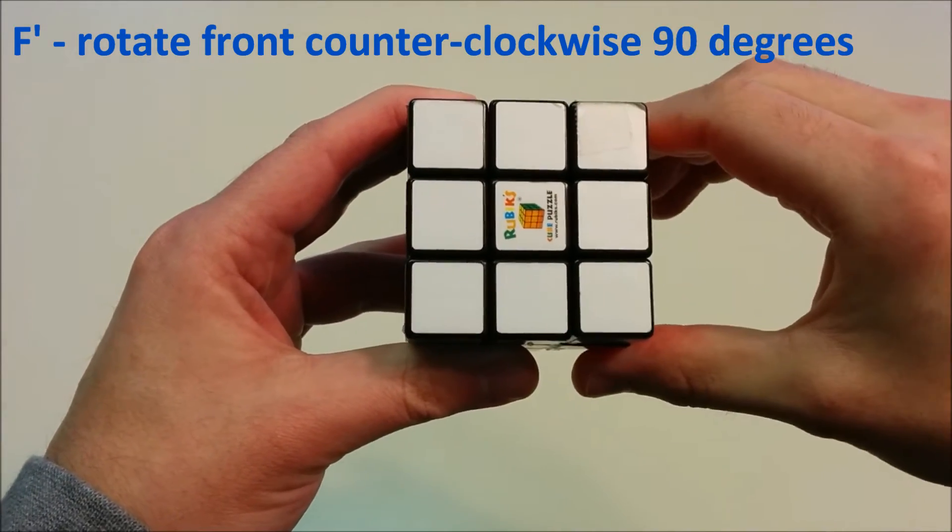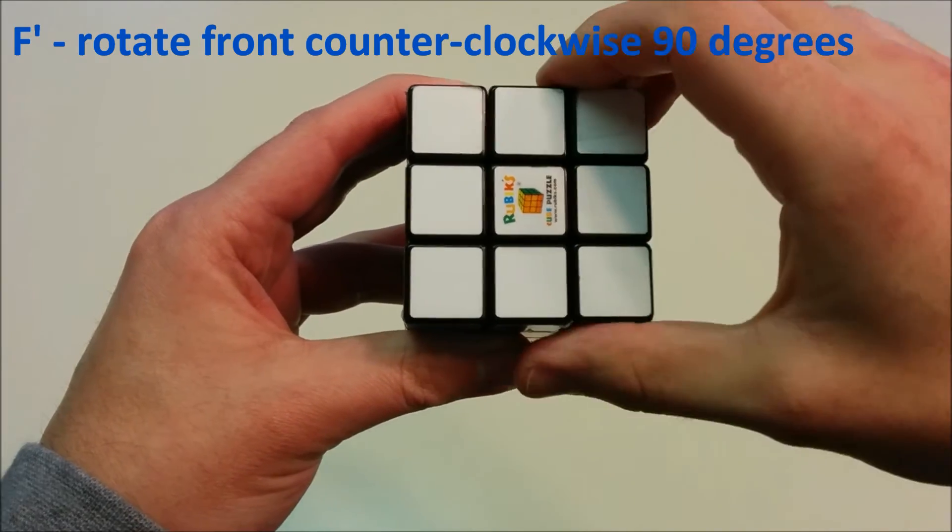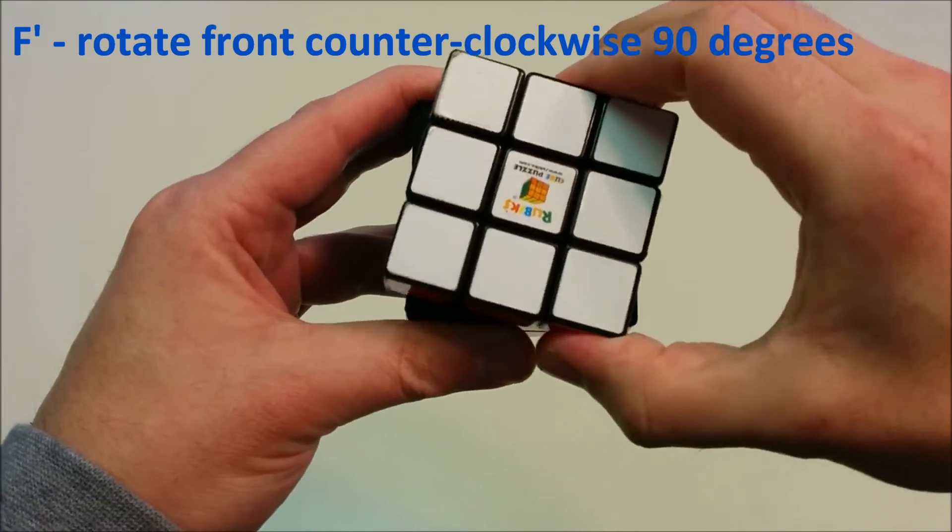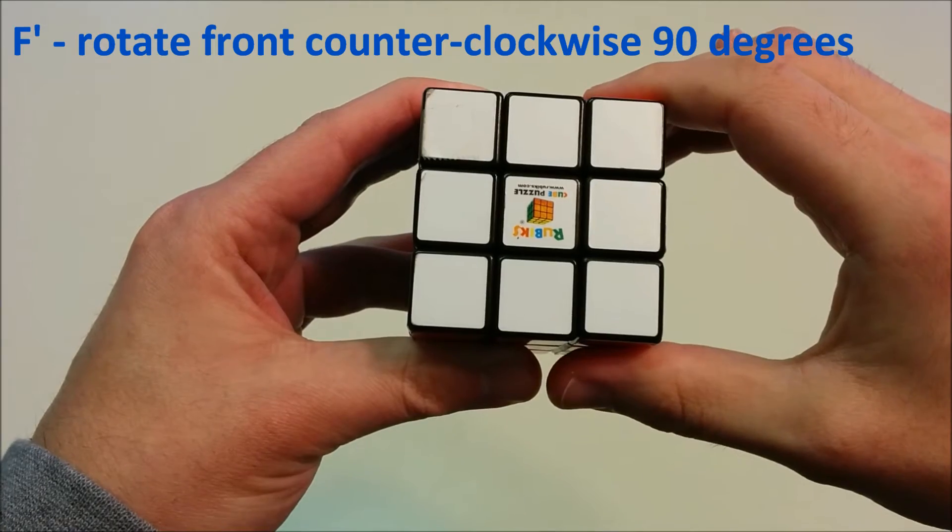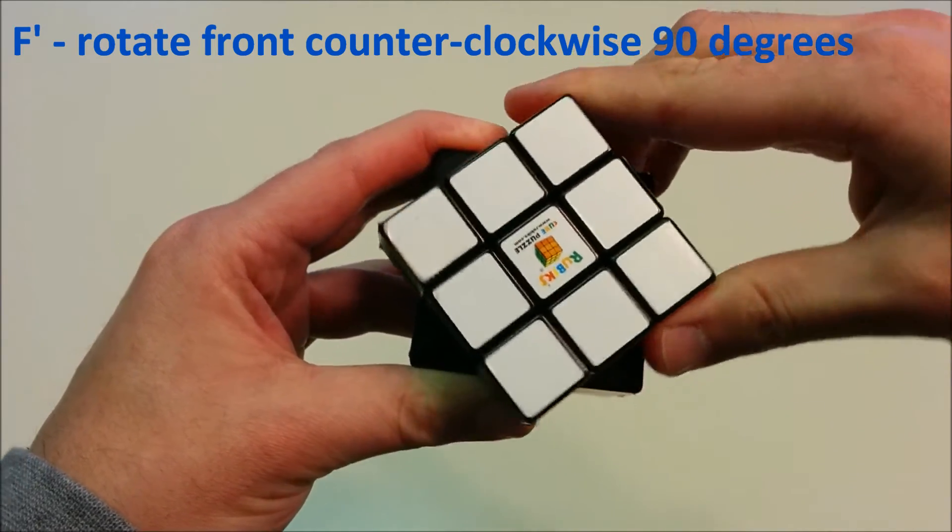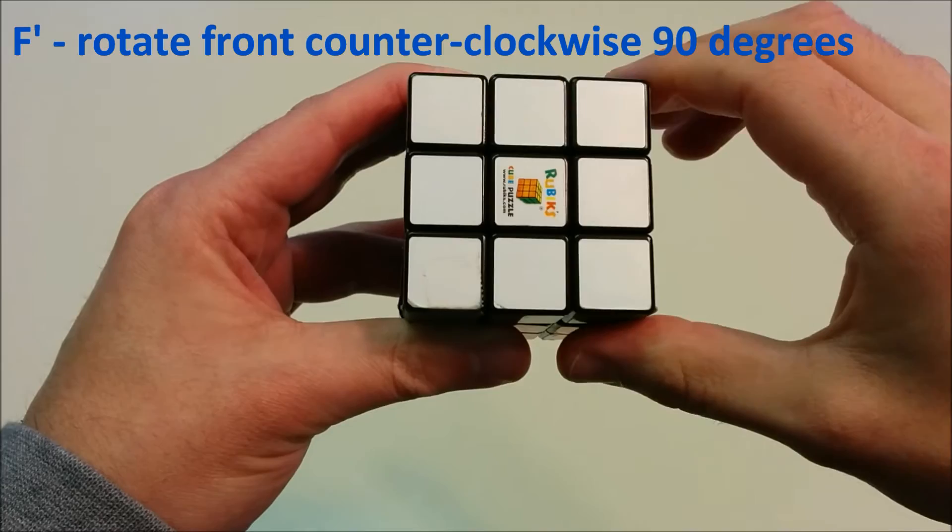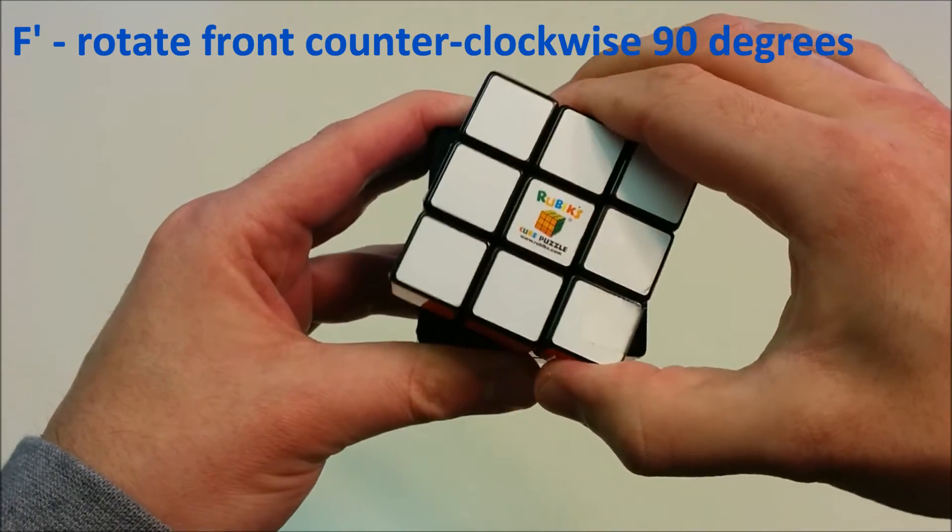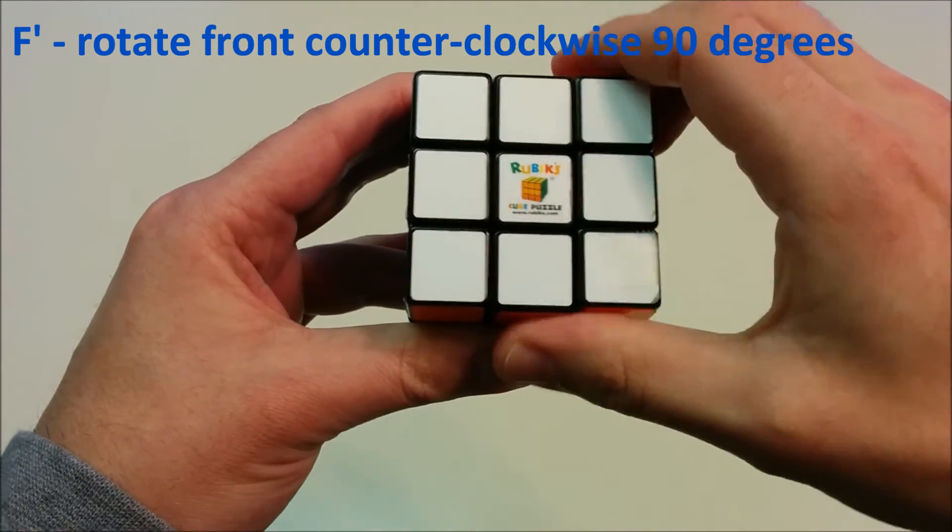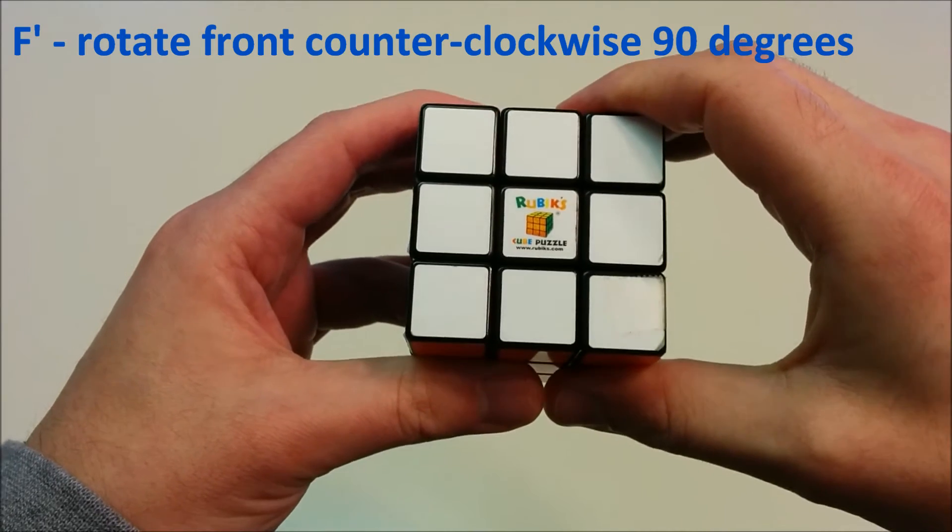If we rotate the front face 90 degrees counter-clockwise, that's known as F prime or F inverse. And similarly, we can keep doing this multiple times. So here's F prime done three times, and here's F prime for a fourth time.